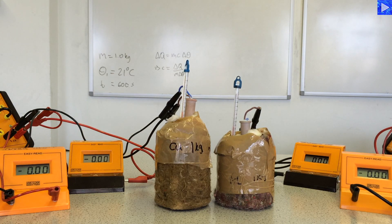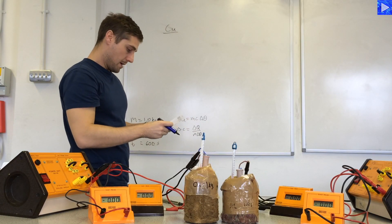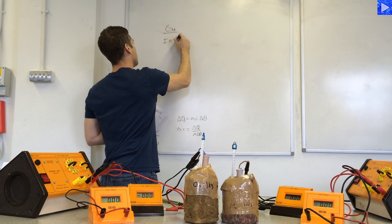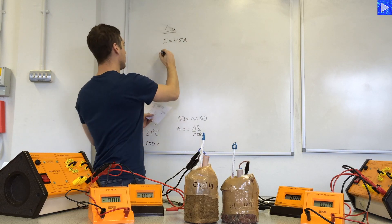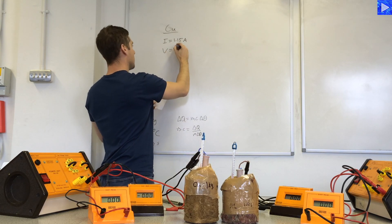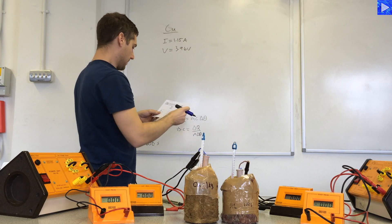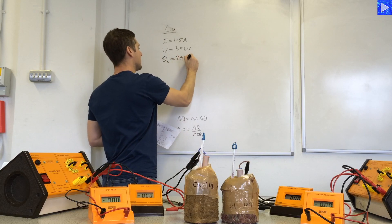Now we'll go to the calculations. Data for the copper block: the average current was 1.15 amps, and the voltage, 3.96 volts, theta 2, 29 degrees C.